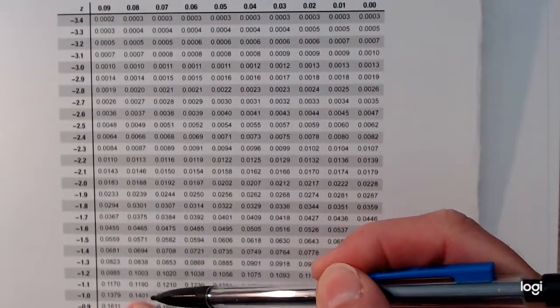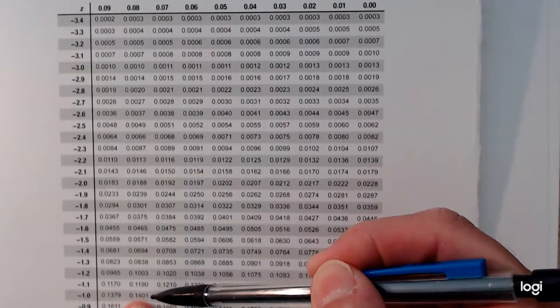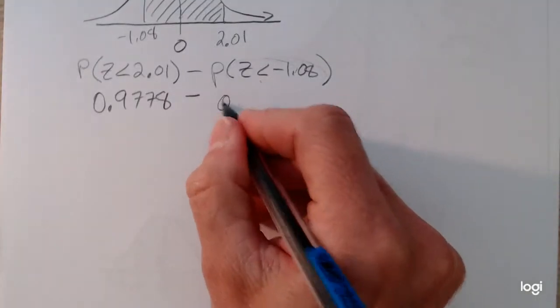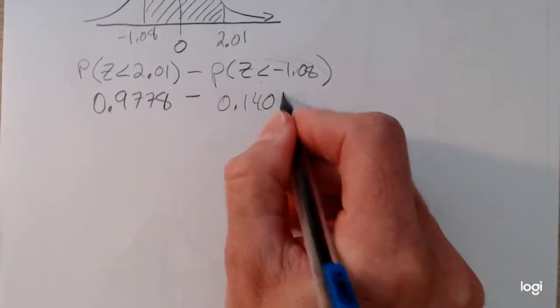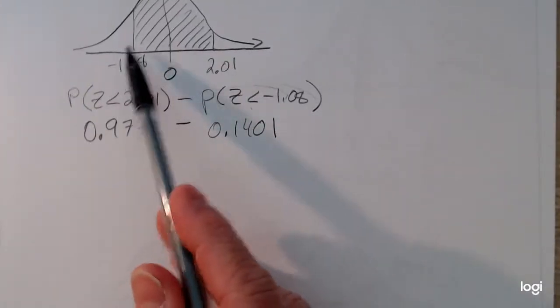All right, so intersecting that row and that column, I get 0.1401. Okay, so this right here would represent this area in this unshaded tail.